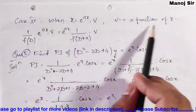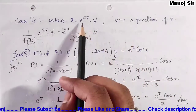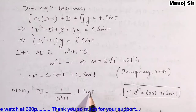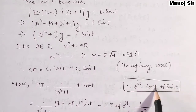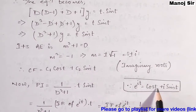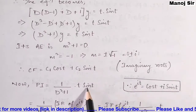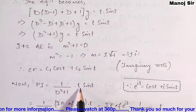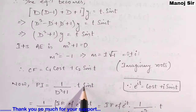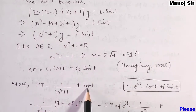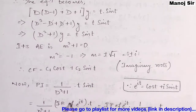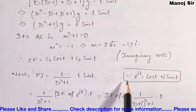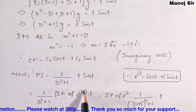Since e^(it) = cos(t) + i·sin(t), sin(t) is the imaginary part of e^(it). Had this been cos(t), we would write the real part of e^(it). So we write sin(t) as the imaginary part of e^(it), giving PI = 1/(D²+1) · imaginary part of [e^(it) · t].